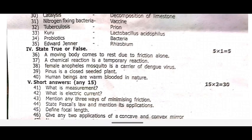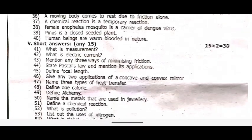State true or false. Thirty-six, a moving body comes to rest due to friction alone. Thirty-seven, a chemical reaction is a temporary reaction. Thirty-eight, female Anopheles mosquito is a carrier of Dengue virus. Thirty-nine, penis is a closed-seeded plant. Forty, human beings are warm-blooded in nature.